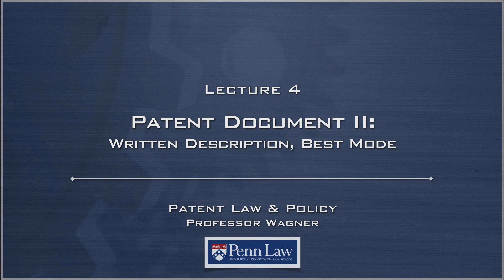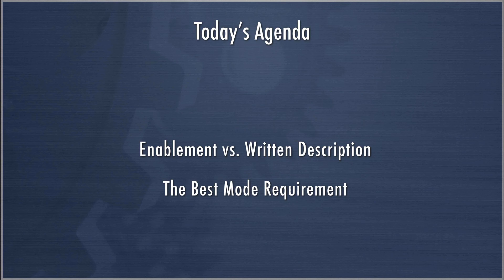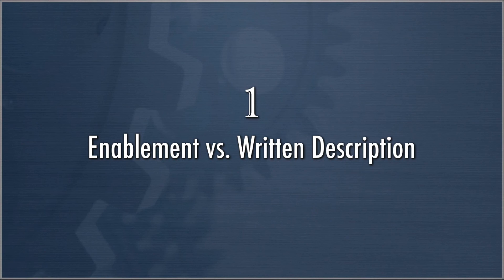This is Lecture 4, Patent Document 2, Written Description and Best Mode. For this lecture, there are two components. We're going to continue our discussion about enablement and written description, the basic disclosure requirements of Title 35 — looking more closely at written description and then circling back to how it interacts with the enablement requirement. We'll also discuss the best mode requirement, which has undergone a diminishment in importance given recent amendments to the law, but remains quite relevant to how people need to disclose their inventions for patentability purposes.